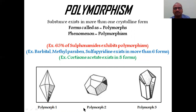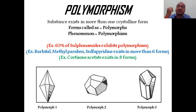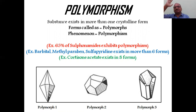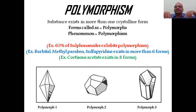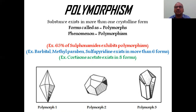For example, novobiocin has polymorph one, polymorph two, polymorph three — these are called polymorphs. 65% of sulfonamides that we use exhibit polymorphism, existing in more than one crystalline form. Barbital, methylparaben, and sulfapyridine exist in more than six forms. Cortisone acetate exists in eight forms.